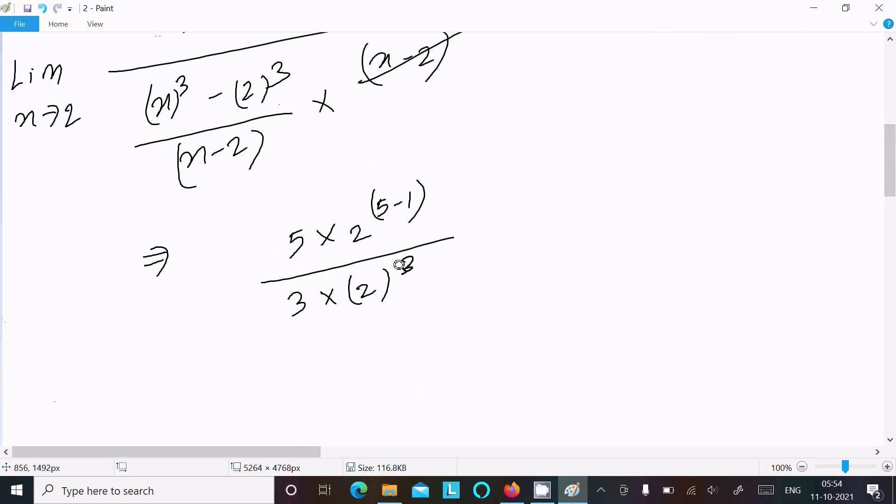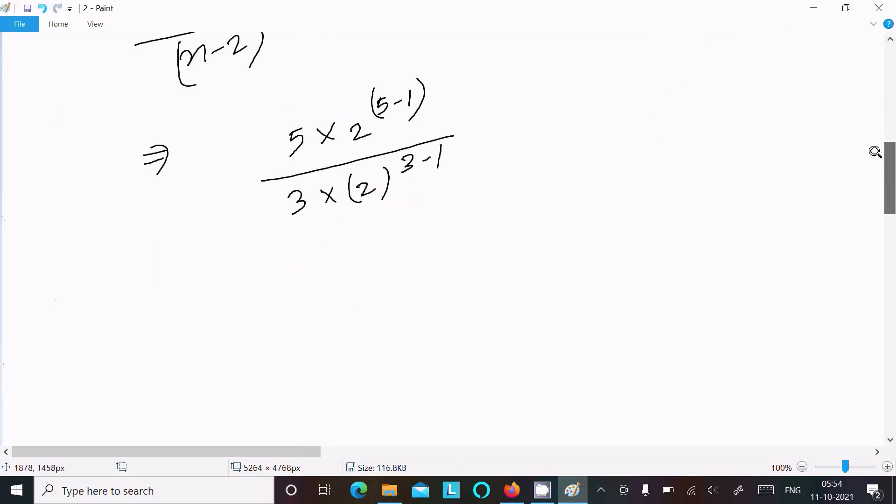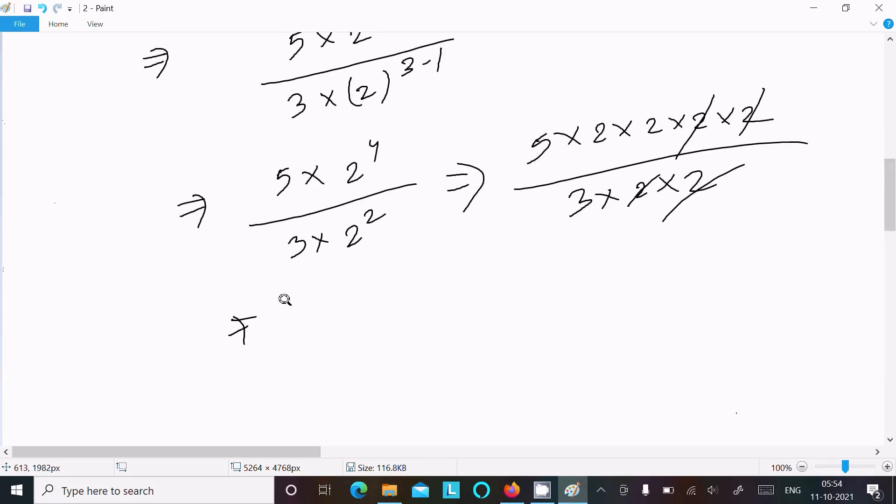Now let's do the calculation: 5 times 2^4 divided by 3 times 2^2. So 5 times 2 times 2 and this here 3 times 2 times 2. So this 2 and this 2 cancel. After doing the calculation, 5 times 10, 10 times 2 is 20, so 20 divided by 3.